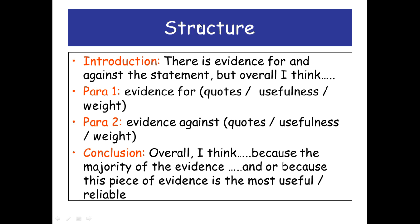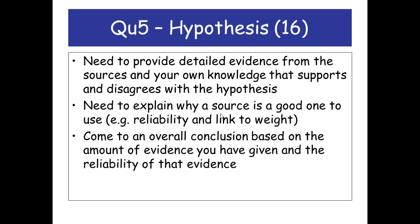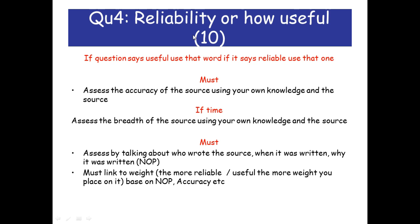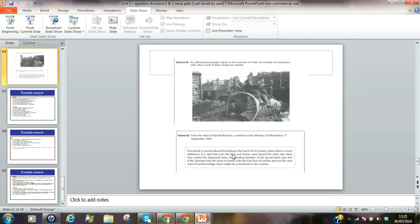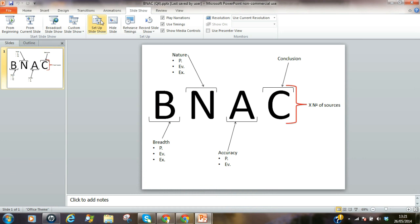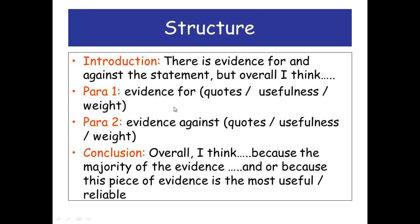When you've got the quotes for and against the hypothesis, you want to use quotes, link to the weight, and the usefulness. The usefulness is what makes these two paragraphs very detailed and chunky — it should bring back question 4's reliability or usefulness structure. What you essentially need to do for question 5 is: quotes, then do the BNAC structure for all the sources you're dealing with in for and against, then the weight. Then come to a little conclusion — just one or two sentences to establish that you've done a conclusion.